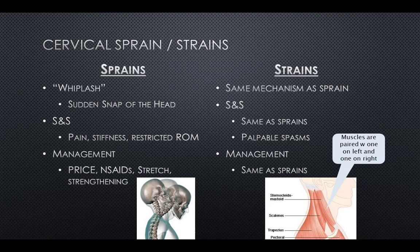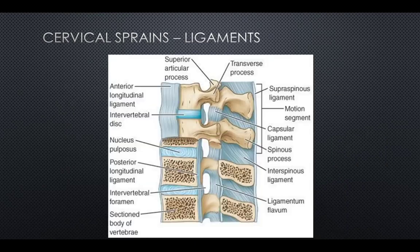Cervical strains occur when the muscles or tendons of the neck are damaged, frequently through the same mechanism as cervical sprains. Signs and symptoms may be very similar to sprains but may also include muscle spasms, which may be easily palpated. We manage cervical strains the same way as cervical sprains. It is important to understand how complex the spine is and how delicate it can be.